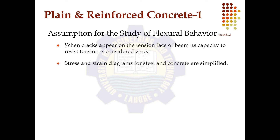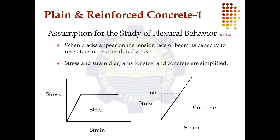When cracks appear on the tension face of the beam, the concrete's capacity to resist tension is considered zero and is ignored. The stress and strain diagrams are simplified for both steel and concrete. For steel, a bilinear curve is used; for concrete, only the linear elastic portion is assumed, up to 0.6 times fc'.